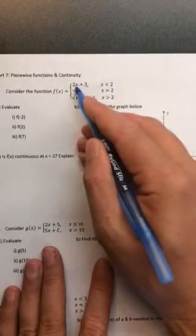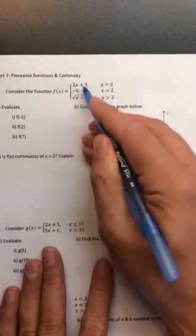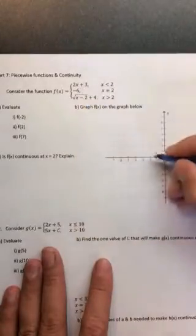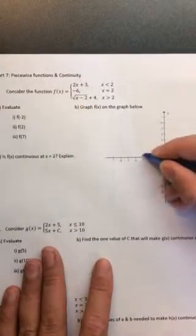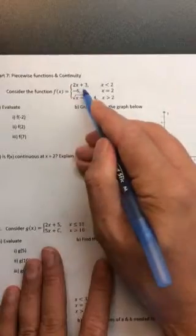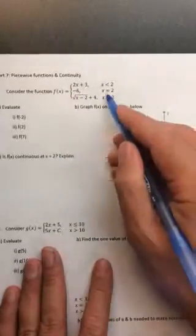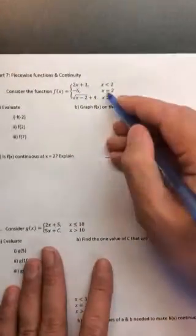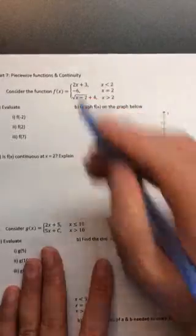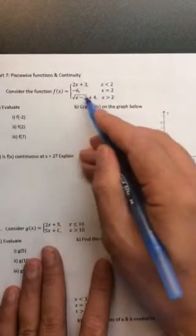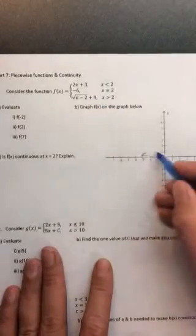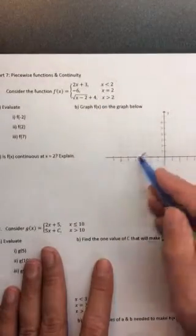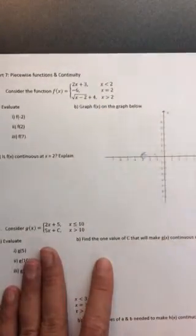Let's look at what this says. This says the function is 2x plus 3 when x is less than 2. So when x is to the left of 2, we're going to get this linear function. Then when x equals 2, so there's only a single x value, the y value will be negative 6. And then the y value will be the square root of x minus 2 plus 4 when x is to the right of 2. So it basically breaks this graph up into different parts.